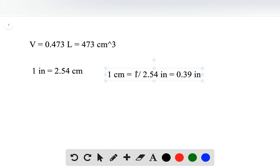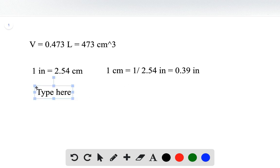So now we know how much inch is in one centimeter. We can do a cube on both sides and then we will get one cubic centimeter equal to 0.39 cubic inch. And that is roughly 0.059 cubic inch.